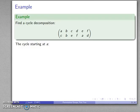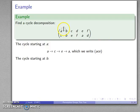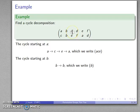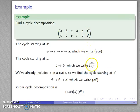Let's find the cycle decomposition of another permutation. Starting at A: A goes to C, C goes to E, E goes to A — so here is a three-cycle, written (A C E). That accounts for A, C, and E. Element B goes to B, so it's a one-cycle. The remaining element is D: D goes to F, and F goes back to D — a two-cycle, written (D F). So the full cycle decomposition is (A C E)(B)(D F).